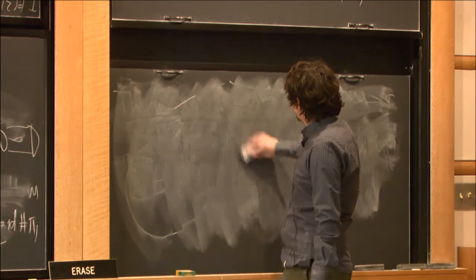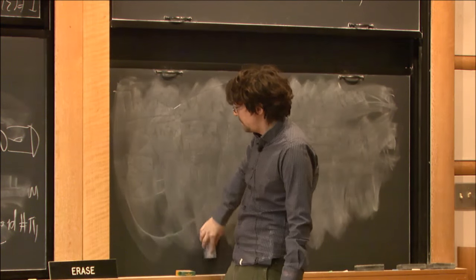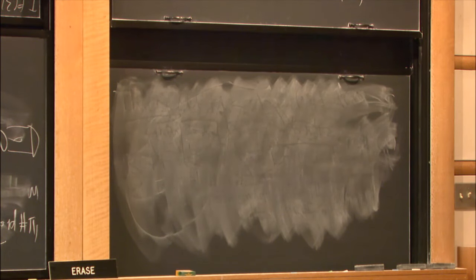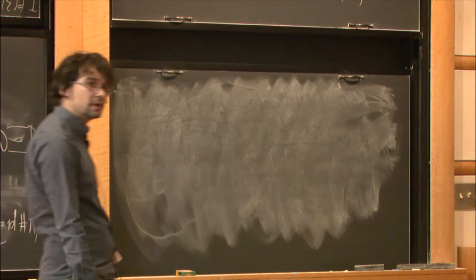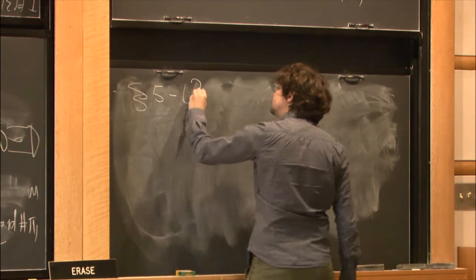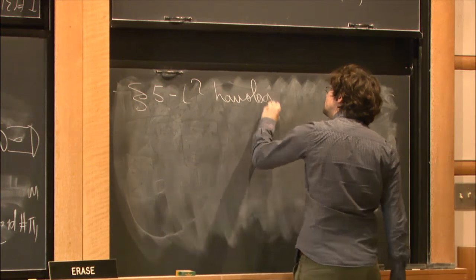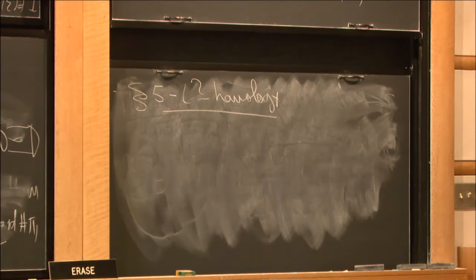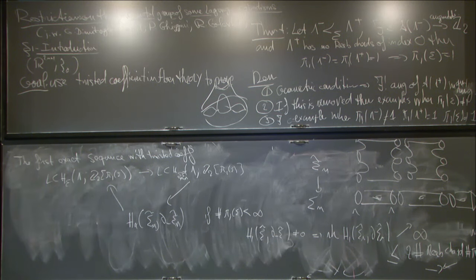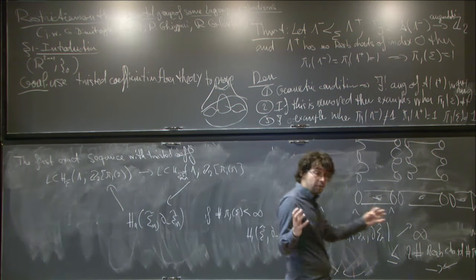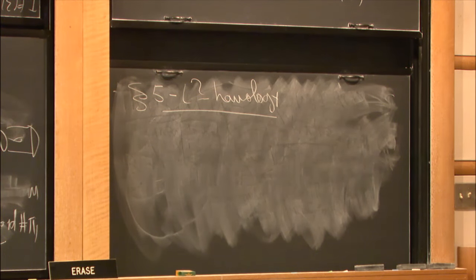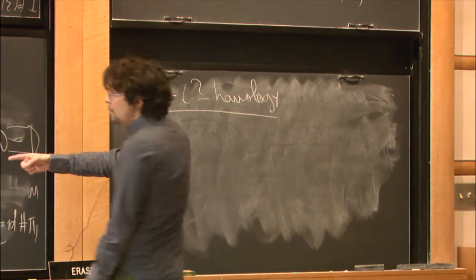When the fundamental group has infinite cardinality, we cannot run this rank argument. This is where something very useful comes in: L² homology. L² homology was introduced by Atiyah to get a Gauss-Bonnet formula for non-compact manifolds with a cocompact isometric group action. It is something that has existed for a while, but we didn't know it — and it actually solved our problem.